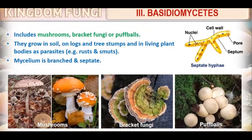Basidiomycetes include mushrooms, bracket fungi, and puff balls. Bracket fungi have a wide, leafy structure. Mushrooms grow in soil, on wooden logs, tree stumps, and inside living plant bodies as parasites.